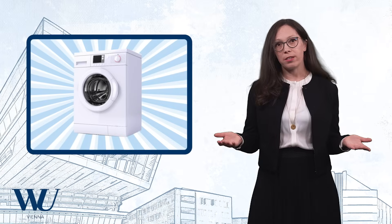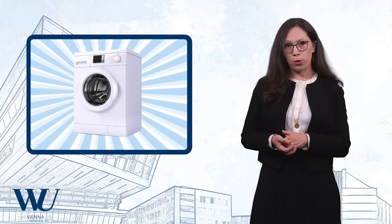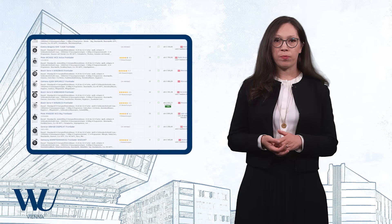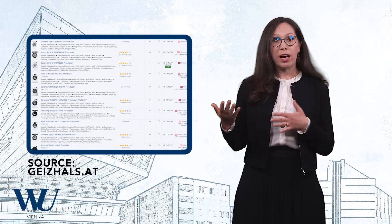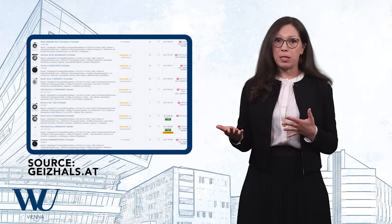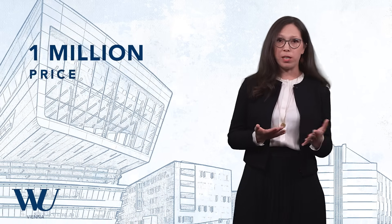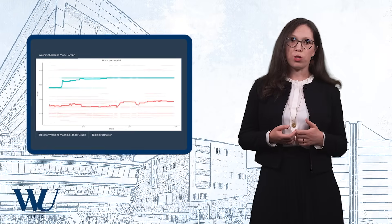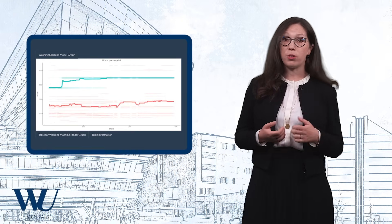For our study, we zoomed in on something everyone needs to buy once in a while: washing machines. We looked at different models sold in Austria and checked whether we could detect resale price maintenance. For the pricing data, we relied on web scraping from a popular price comparison site and made a database that now contains over one million price data points. With this data, we built two dashboards. The first shows the prices of a certain model of washing machine over time and lets you compare it to other models.